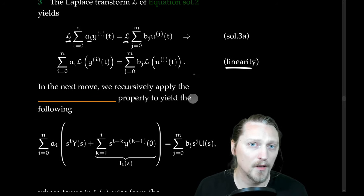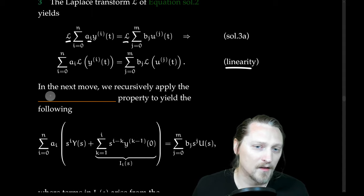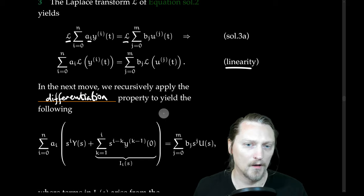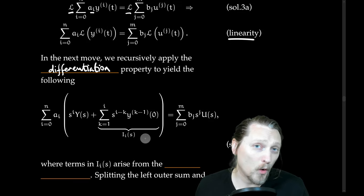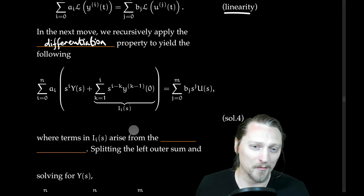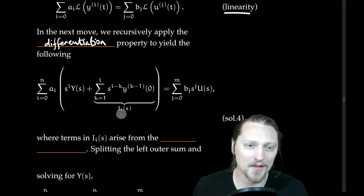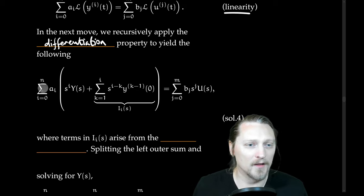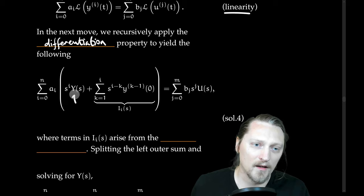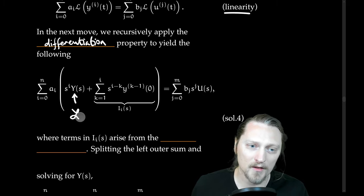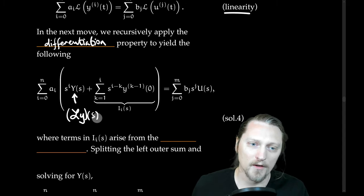In the next move, we recursively apply the differentiation property of Laplace transforms to yield the following. Let's ignore the big messy I_i term first and focus on the first term in the summation. We have s raised to the i-th power multiplied by capital Y of s, which is simply the Laplace transform of little y as a function of s.